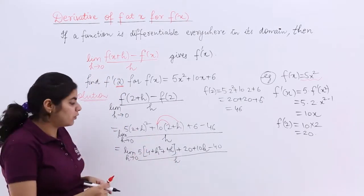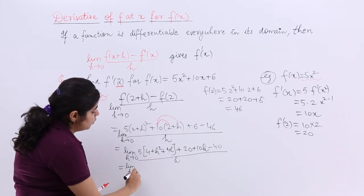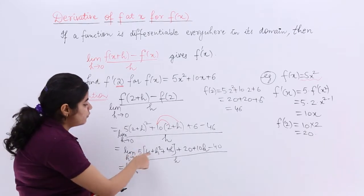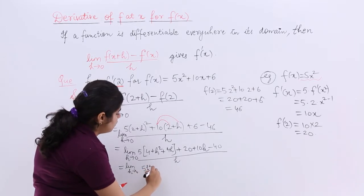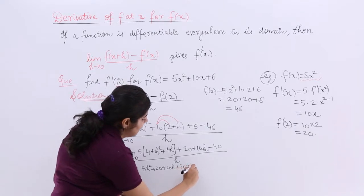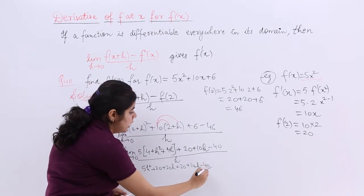Next is opening of the brackets. Let us open the brackets again. Limit h tends to 0. Only solution is left. You can always solve it yourself. Let us still do it. 5 times 4 is 20, 5h square, 5h square plus 20 plus 20h plus 20 plus 10h minus 46. Upon h.